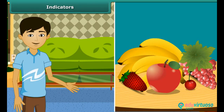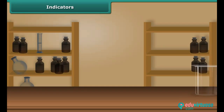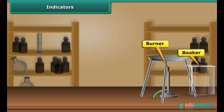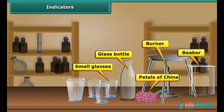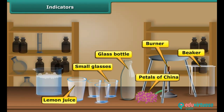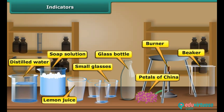You can easily test the acidic or basic nature of a substance by making a simple indicator solution at home. You will need a beaker, a gas stove, petals of China rose, a clean glass bottle, three small glasses, lemon juice, soap solution, and distilled water.